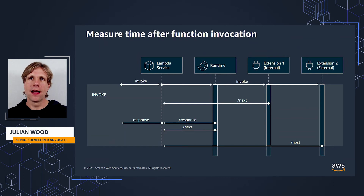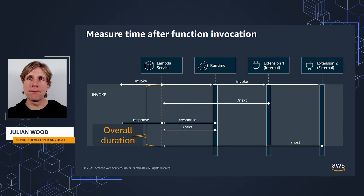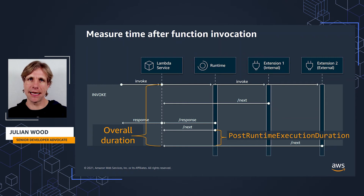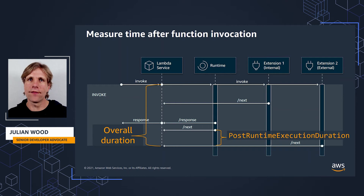Just to explain duration: when a Lambda function invokes, its overall function duration is the total amount of time that your function code spends processing an event. To know the performance impact of extensions on the invoke phase, Lambda outputs the post runtime execution duration metric. This measures the time spent between the runtime next API request and the last extensions next API request — that's the extra time extensions take over and above the runtime. To measure the increase in memory used, you can use the max memory use setting and run different versions of functions side by side to understand the impact of a specific extension.